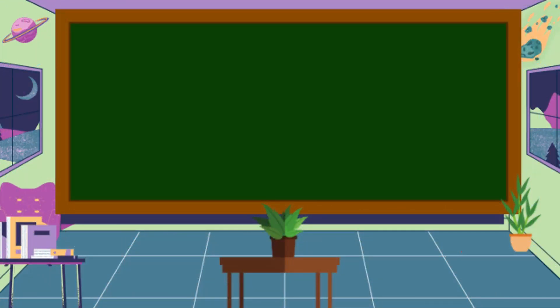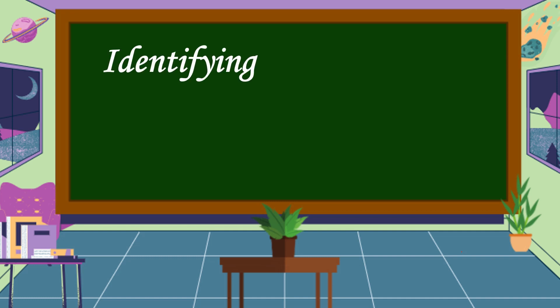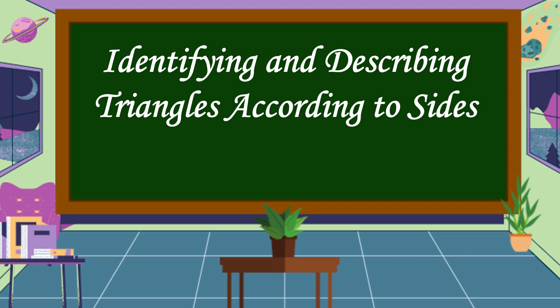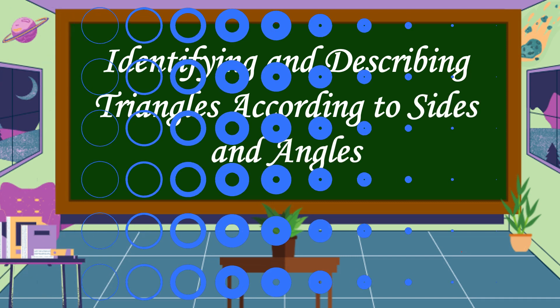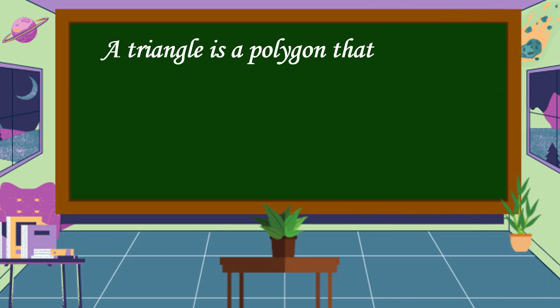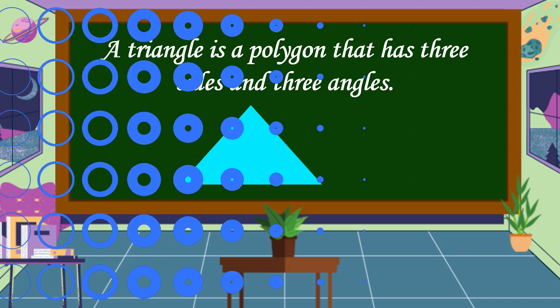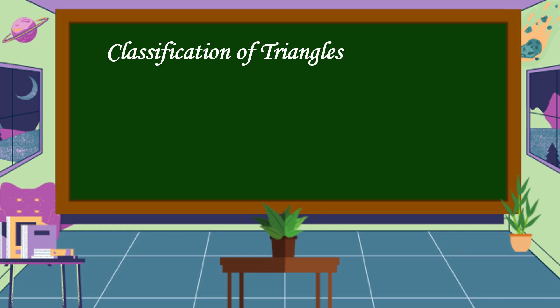Hello everyone, welcome to Math is Fun. Our lesson for today is all about identifying and describing triangles according to sides and angles. A triangle is a polygon that has three sides and three angles. Triangles can be classified according to their sides and angles. First, we're going to discuss the classification of triangles according to their sides.